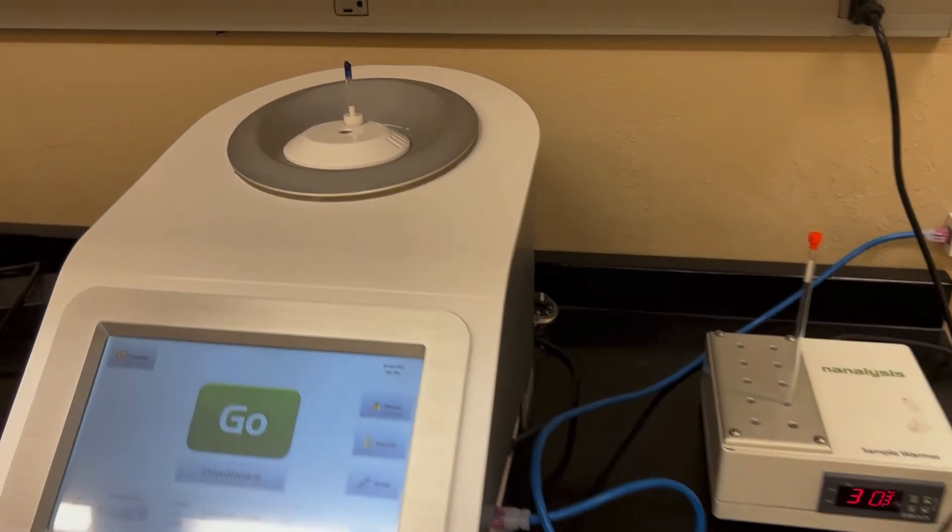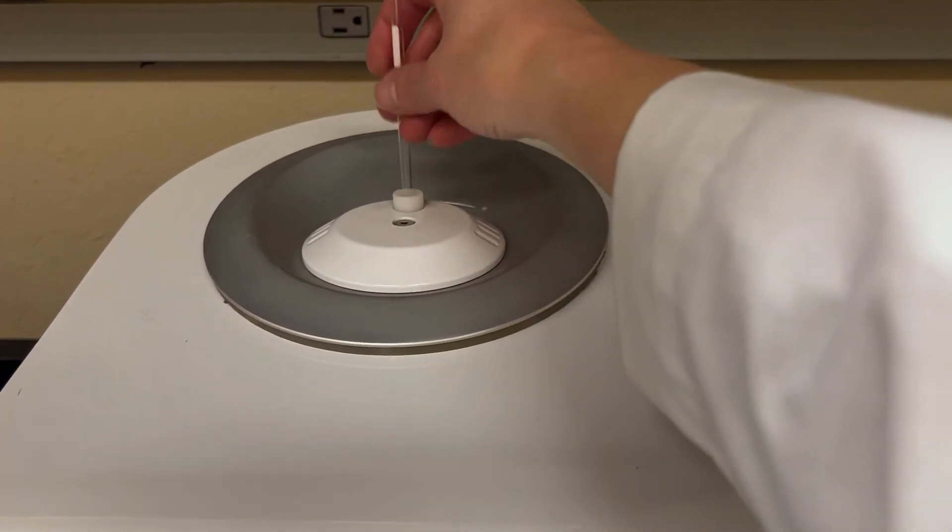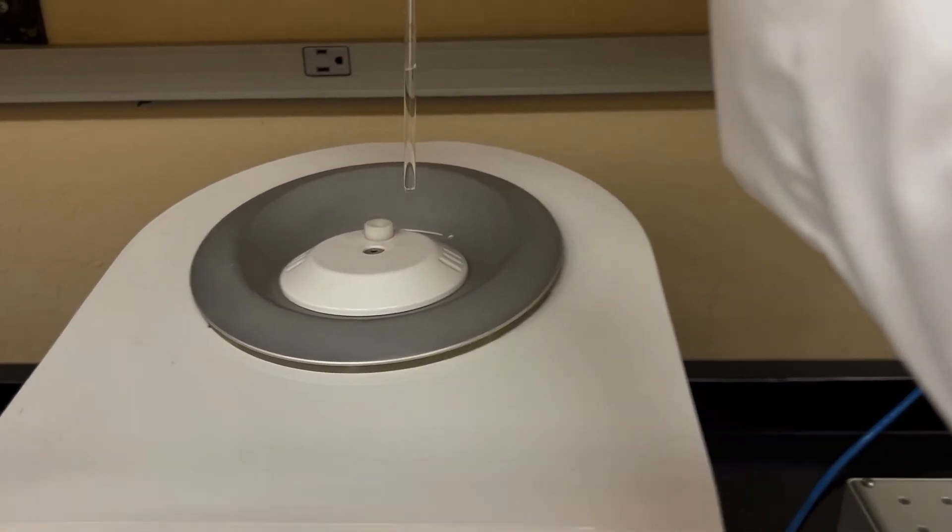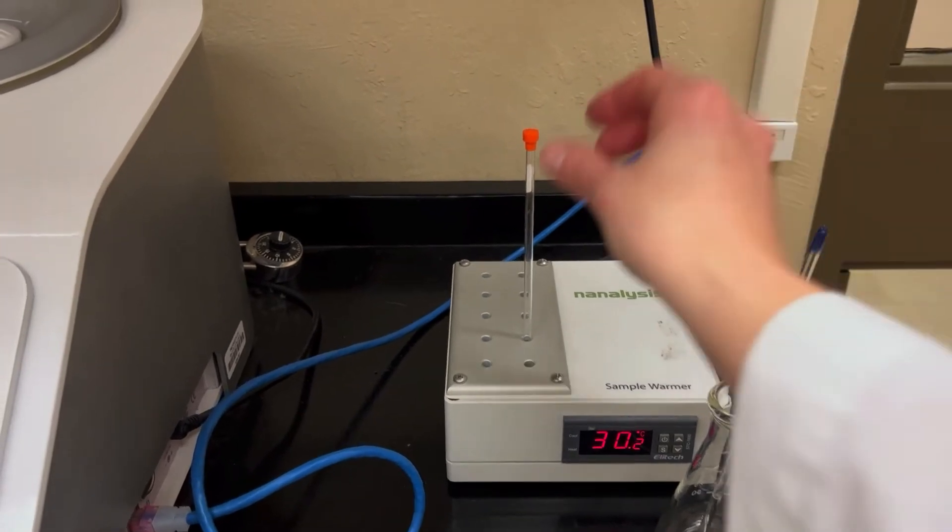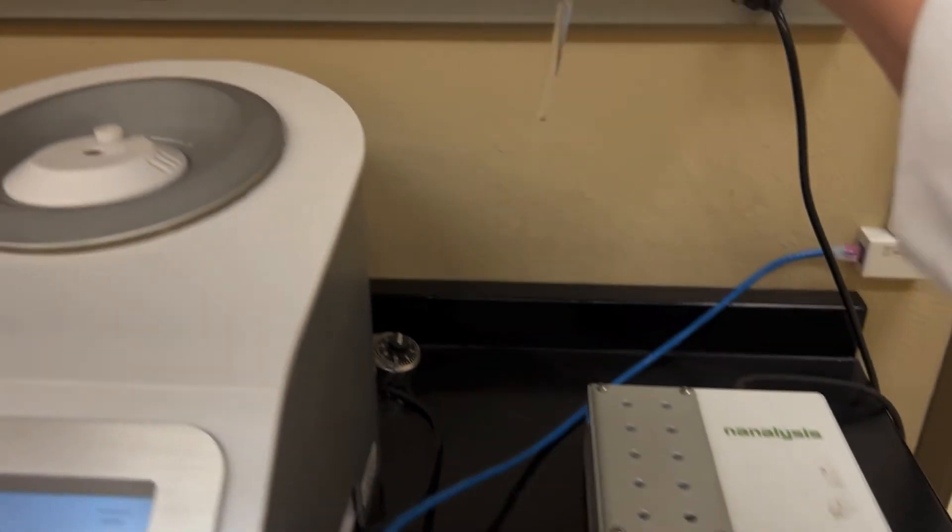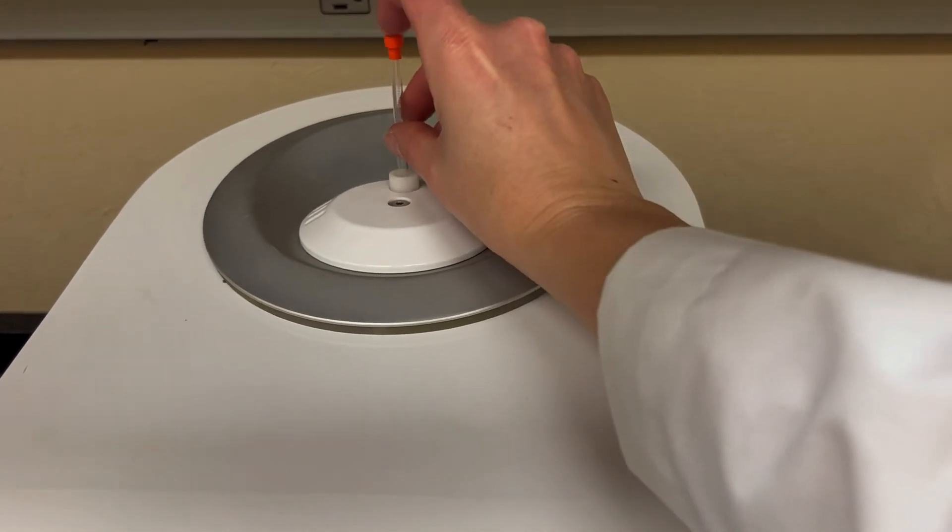After two minutes you're going to remove the reference sample which is always kept in the instrument. Remove it while keeping it vertical so that you don't snap it in half and then you can just set that aside. You can then take your warm sample and place that inside the instrument again keeping it vertical and just push it in until it won't want to go any further.